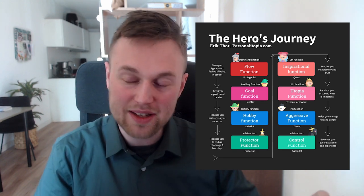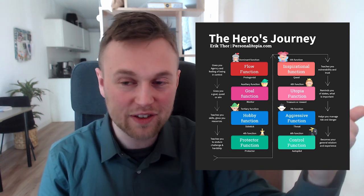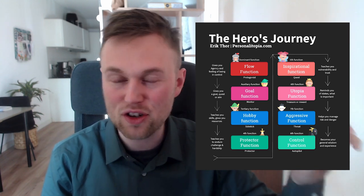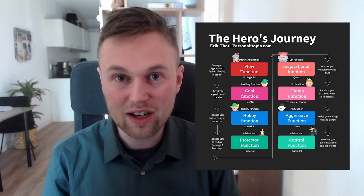What he did was assign each cognitive function to a specific position: the dominant, auxiliary, tertiary, inferior, 5th, 6th, 7th, and 8th cognitive function, rated in the order of consciousness. The higher up in the stack, the more conscious and aware we are when we use it. I'd like to say that consciousness is a variable and depends from person to person. Don't stare yourself blind at how much you use a cognitive function — you can use any cognitive function. Rather, understand the impact that each cognitive function will have on your mental health and well-being when you use it.